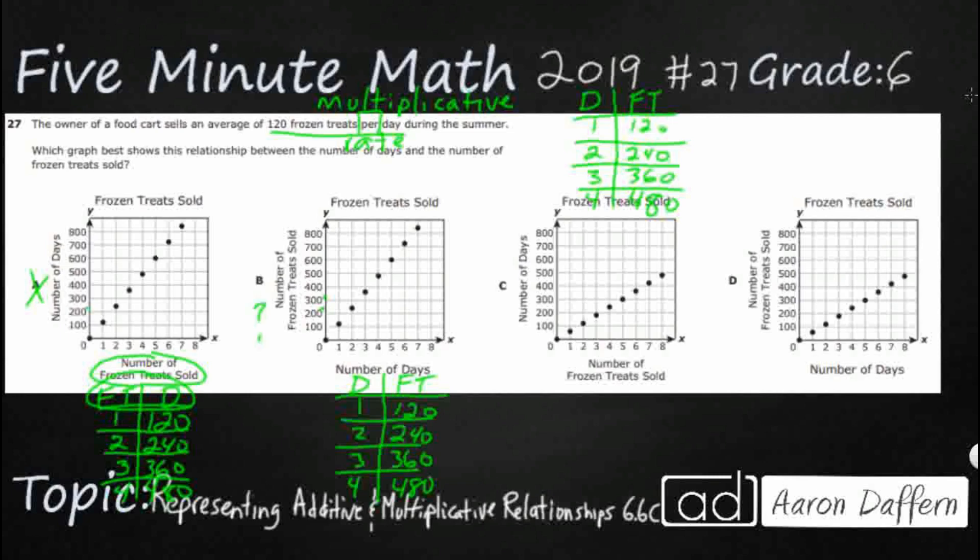C we know is going to be wrong because of the x-axis being the number of frozen treats sold. And that's not going to work for us. That's what happened over here with A, and they completely flipped it. The number of frozen treats needs to be the y-axis. So let's look at D real quick.